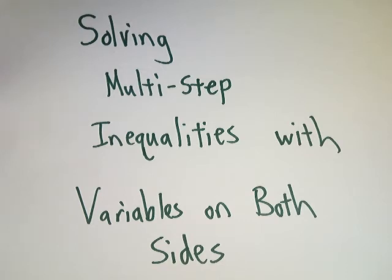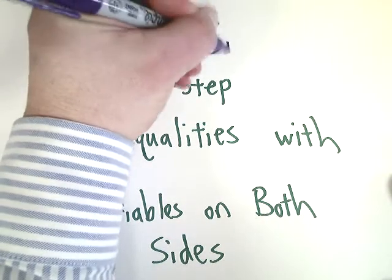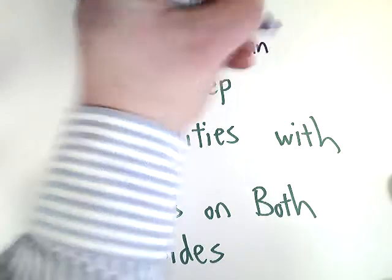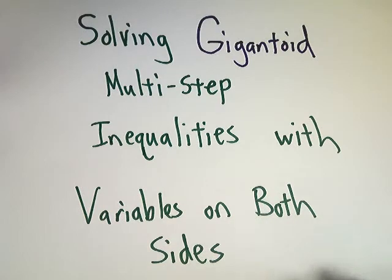Alright, this is the second Solving Multistep Inequalities with Variables on Both Sides, so I'm going to edit it so it looks different than the other ones. Instead of saying Solving Multistep Inequalities with Variables on Both Sides, I'm going to say Solving Gigantoid Multistep Inequalities with Variables on Both Sides.